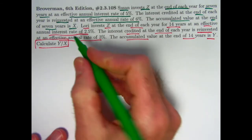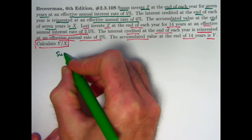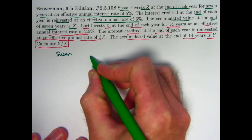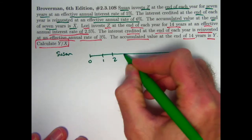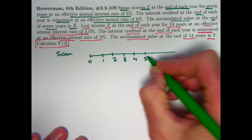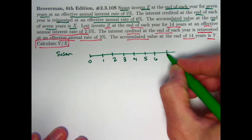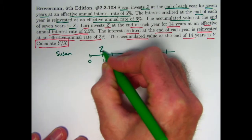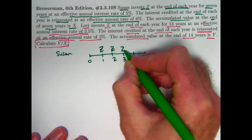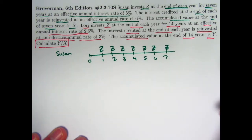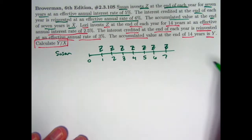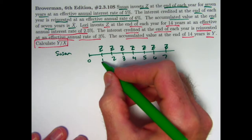Alright, take it piece by piece. Let's look at Susan first. She's got the seven-year timeline. Let's go ahead and write all the numbers for Susan. We won't write all the numbers for Lori. She invests Z at time 1, time 2, time 3, time 4, time 5, time 6, and time 7 in this account that earns interest at 5%.